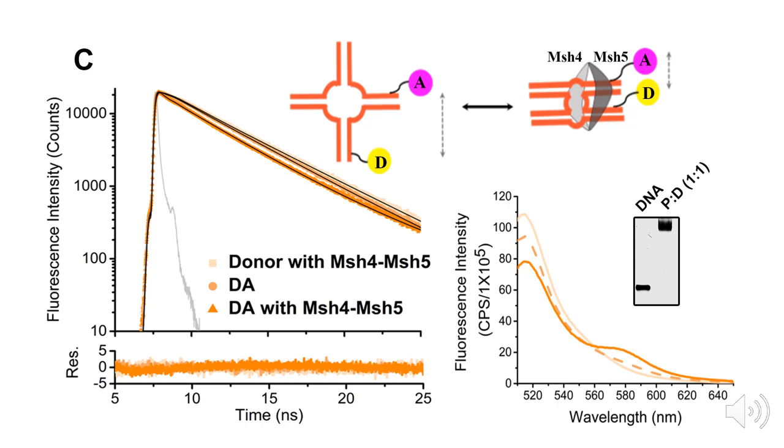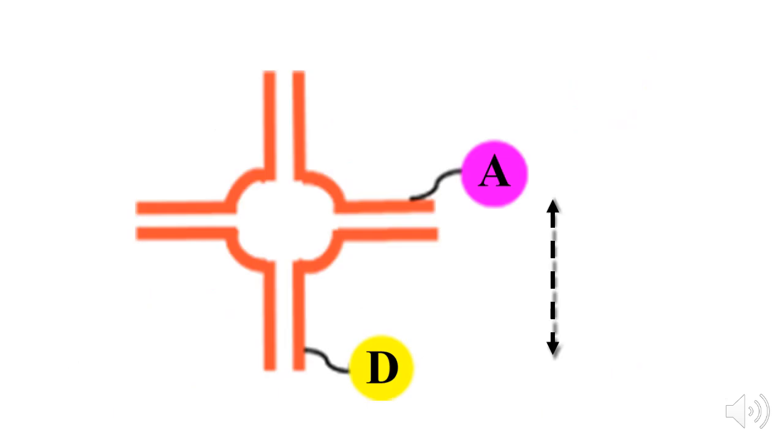In panel C, we show the binding interaction between MU-S-gamma and an open junction. The open state is achieved by introducing six mismatched base pairs at the junction center.